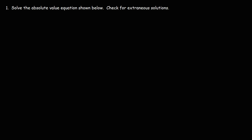In this video, we're going to talk about how to check for extraneous solutions when solving absolute value equations. The extraneous solution is the solution that doesn't work in the original equation — that's the one we need to throw out.